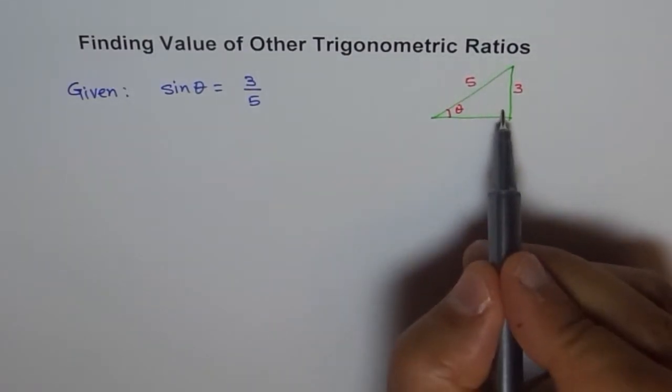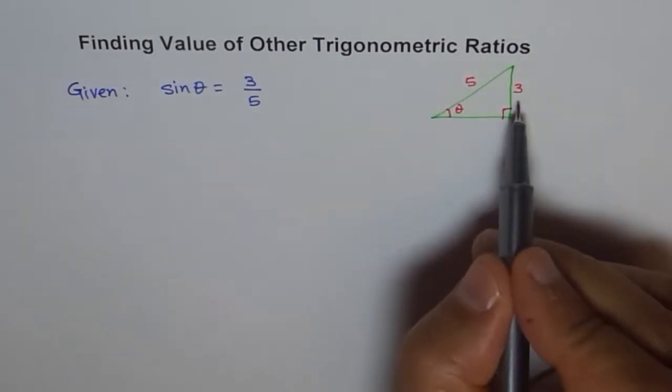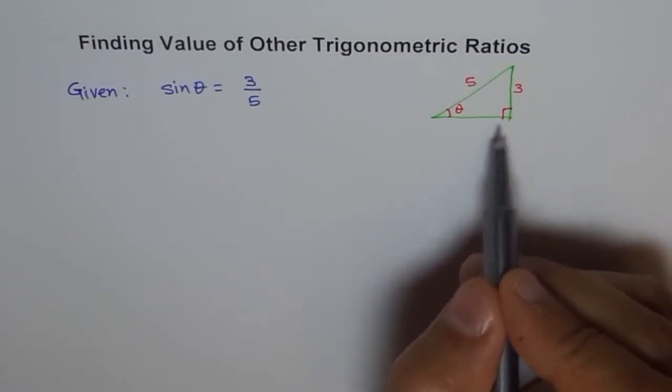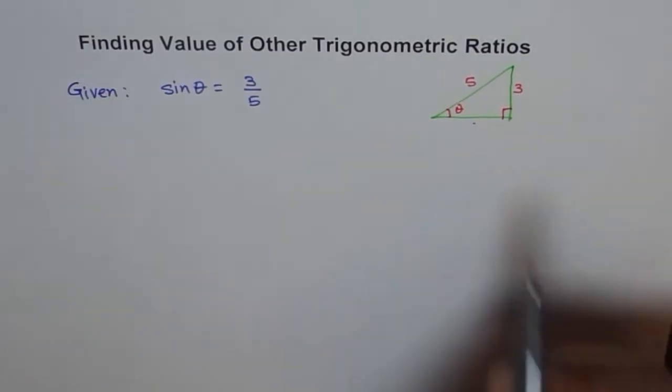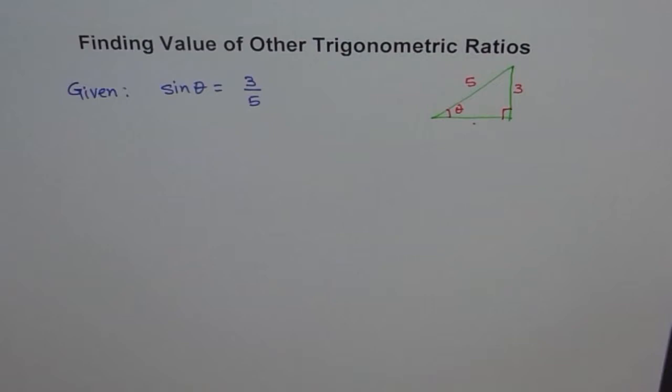If my hypotenuse is 5 and 3 is my opposite side in this right angle triangle, then what should this side be? We can calculate that out using Pythagorean theorem.